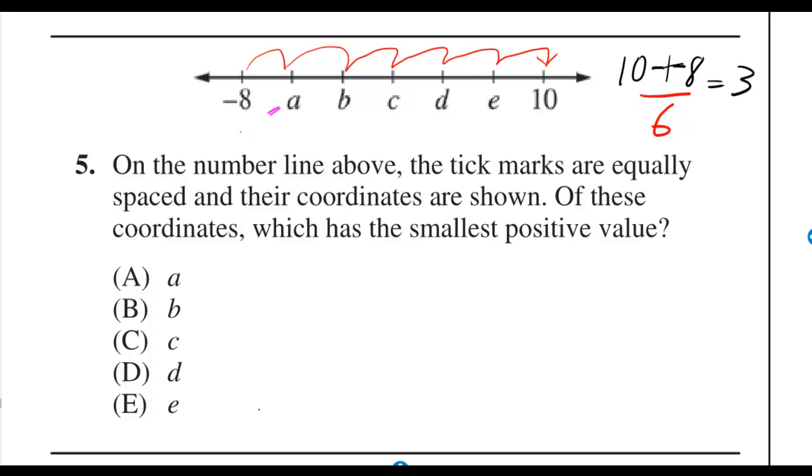So that means a is negative 8 plus 3, which is negative 5. That means b is negative 5 plus 3, which is negative 2.